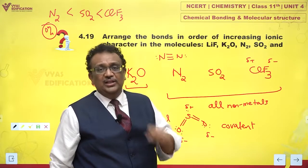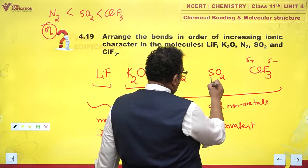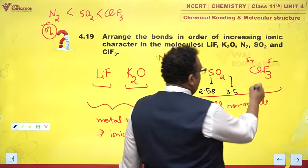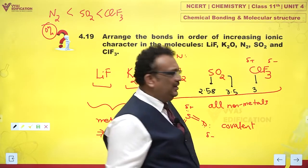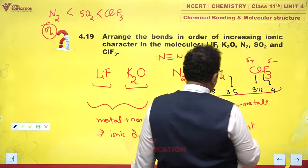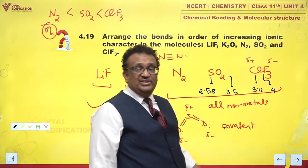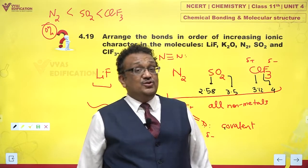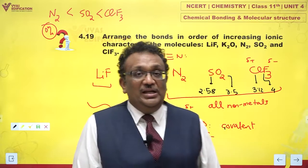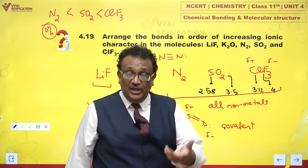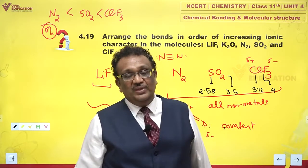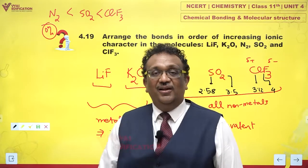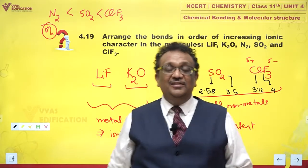If you look in the textbook, the electronegativity of sulfur is around 2.58 and oxygen is close to 3.5. Chlorine is close to 3.12 and fluorine is around 4. The difference between Cl and F is 0.88, and the difference between S and O is around 0.92 — not much different. Most unfortunately, the difference between electronegativity of sulfur and oxygen is actually a little more than that of Cl and F as per standard data.